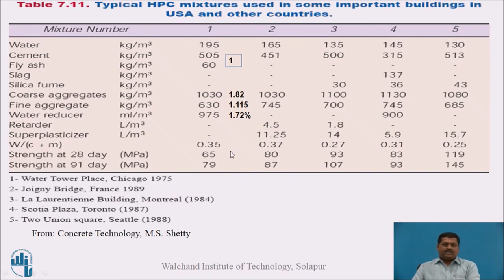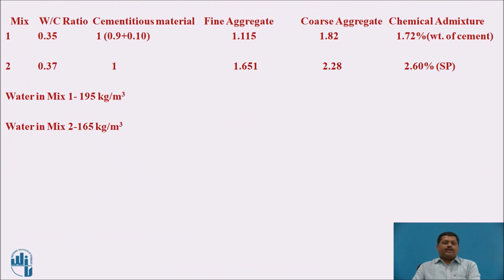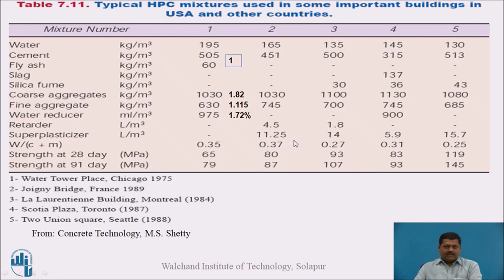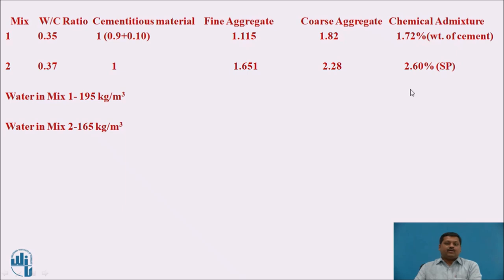These are the typical mix proportions for HPC. In Mix 1, considering cement and fly ash together as one cementitious unit, coarse aggregate is 1.82, fine aggregate is 1.15, and a water reducer chemical admixture is used at 1.75%. In Mix 2, the water-cement ratio is 0.37, fine aggregate is 1.651, and coarse aggregate is 2.22. The superplasticizer dose in Mix 2 is 11.25 liters per cubic meter, which is 2.6% by weight of cement. Water used in Mix 1 is 125 kg/m³ and in Mix 2 is 165 kg/m³ — the higher water quantity in Mix 2 is why the superplasticizer dosage is higher.